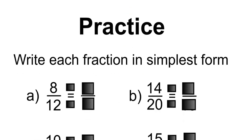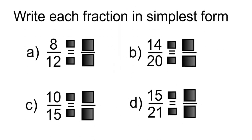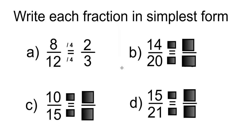Practice: Write each fraction in simplest form. For 8 over 12, the greatest common factor is going to be 4. So 12 divided by 4 is equal to 3, and 8 divided by 4 is equal to 2. So 2 over 3 is equivalent to 8 over 12.